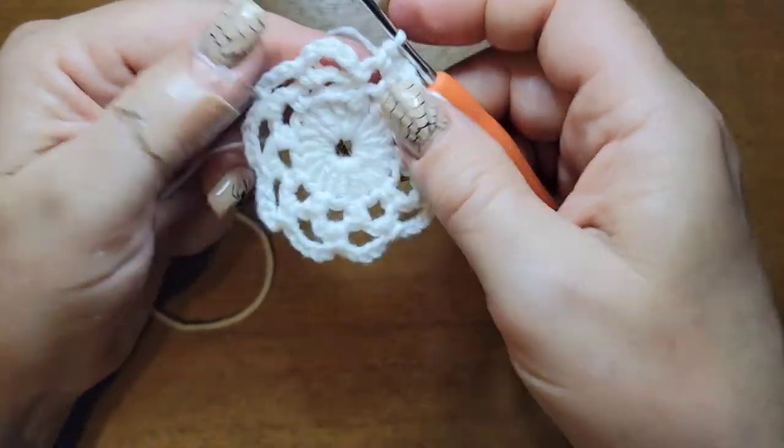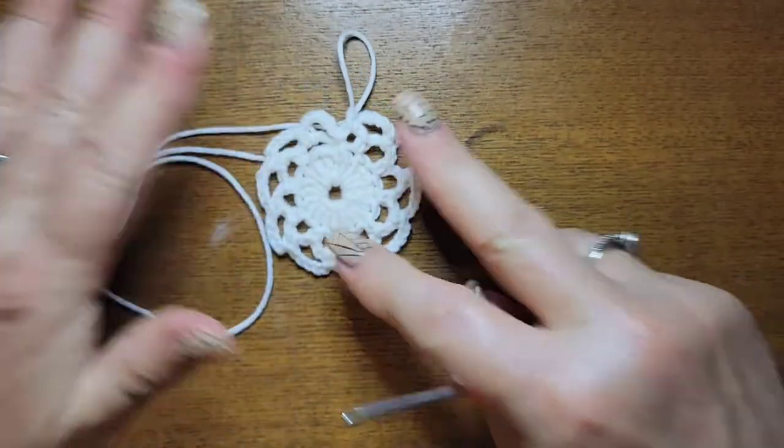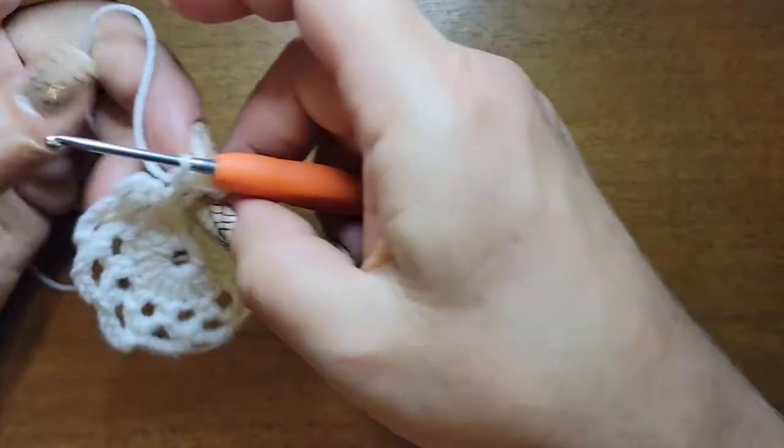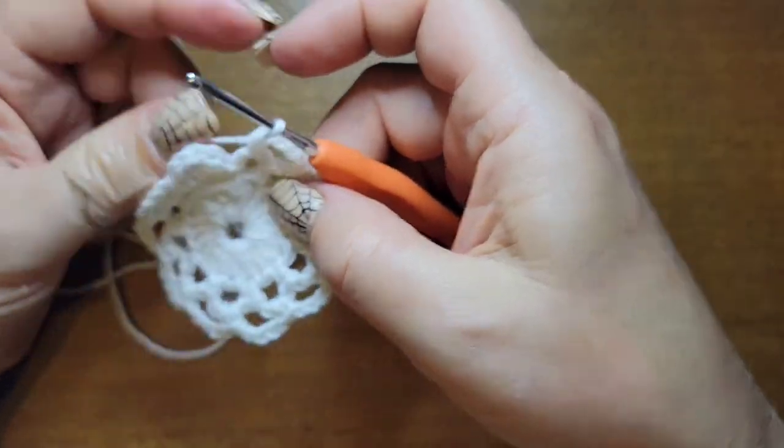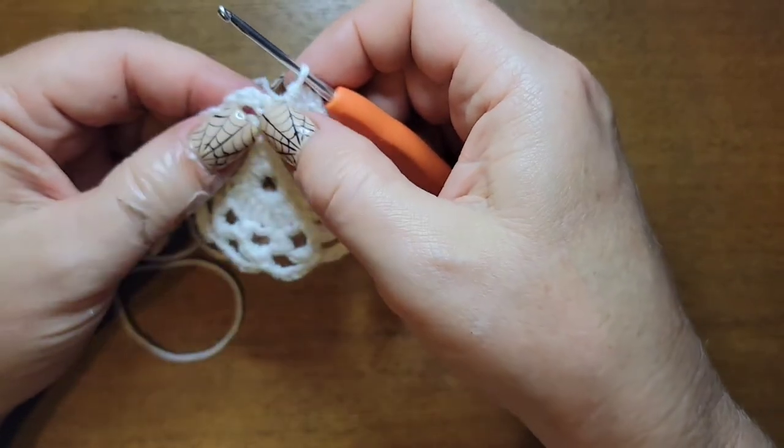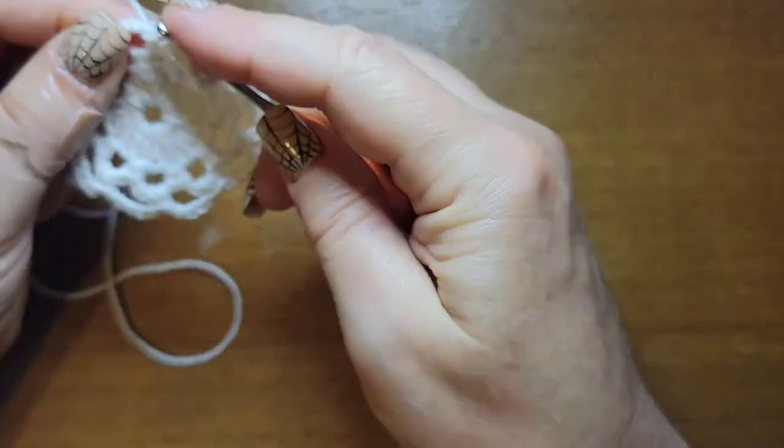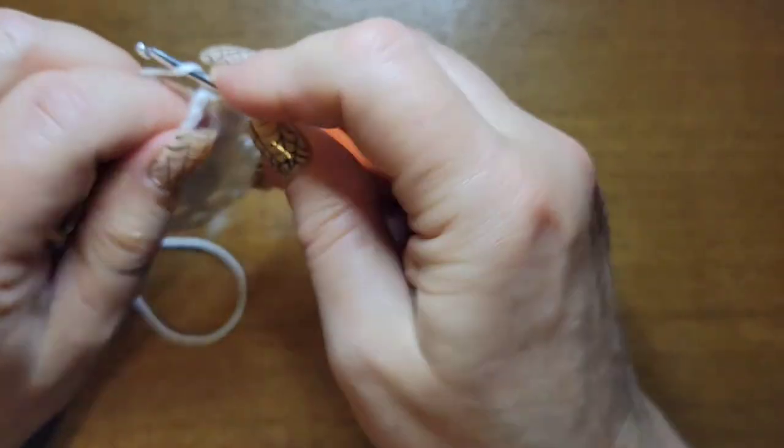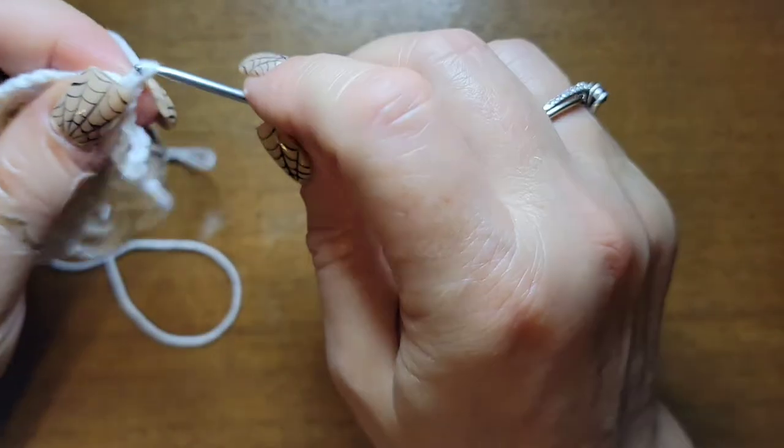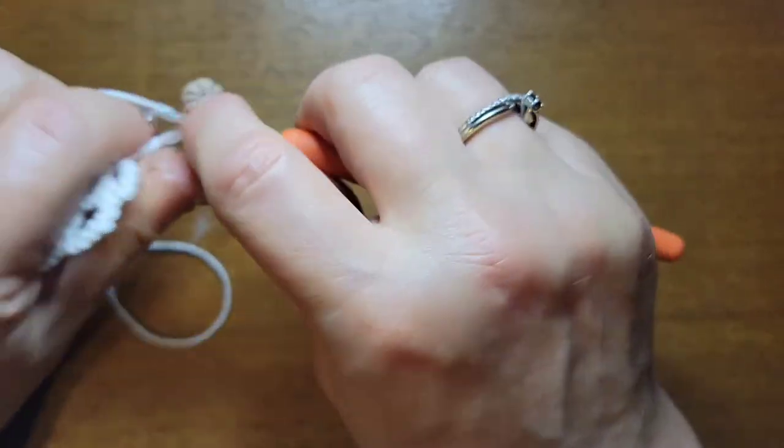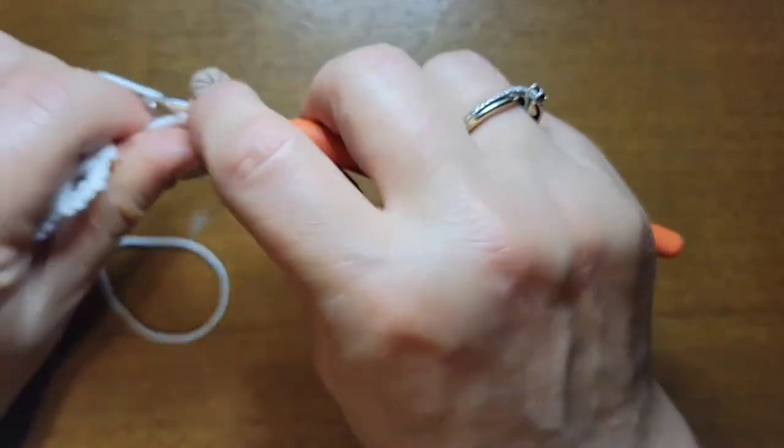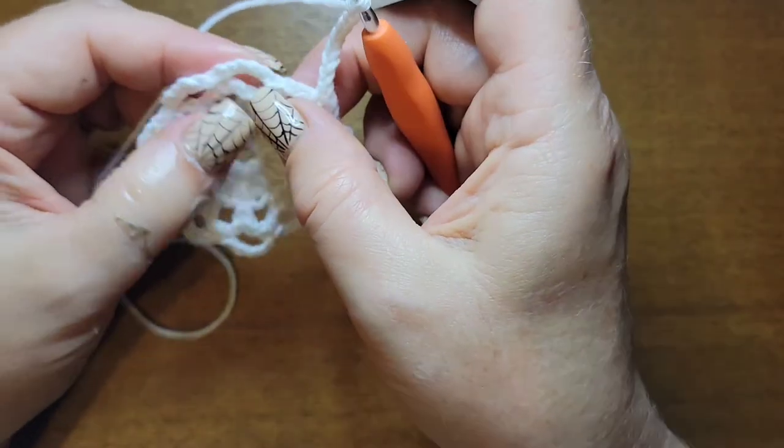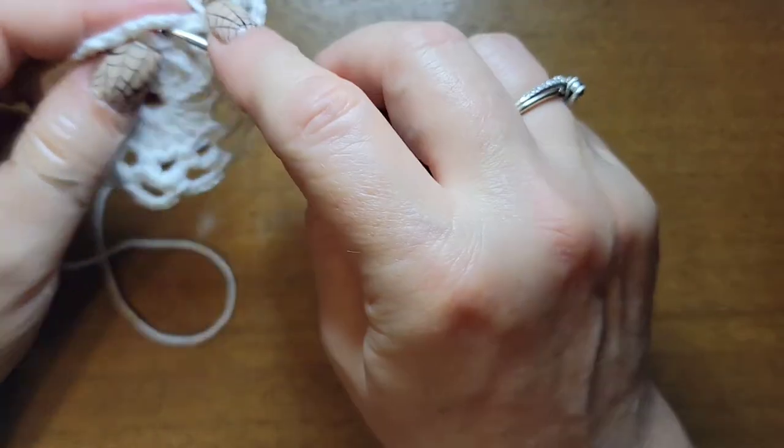Do not slip stitch those together because if you do it'll take it out of balance for your ten. You should have 2, 4, 5, 6, 7, 8, 9, 10, and if you hook that, that'll make 11, so please do not hook that. Leave that open for the next round. In the chain here, I want you to put three single crochets. Chain nine. Then in the next chain spot, three single crochets.